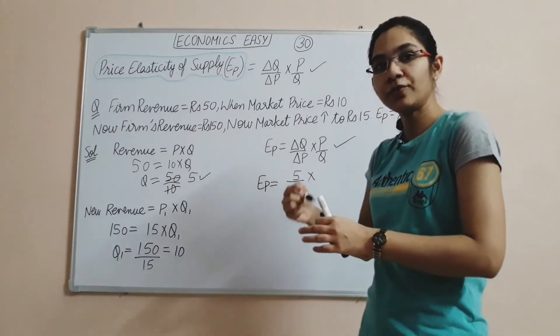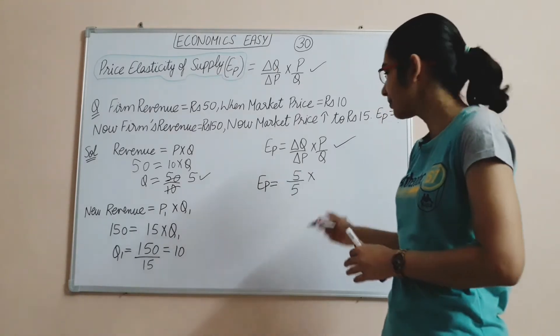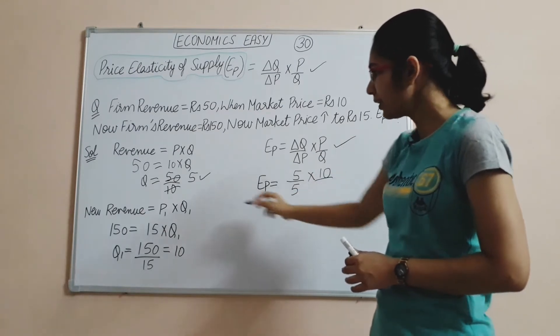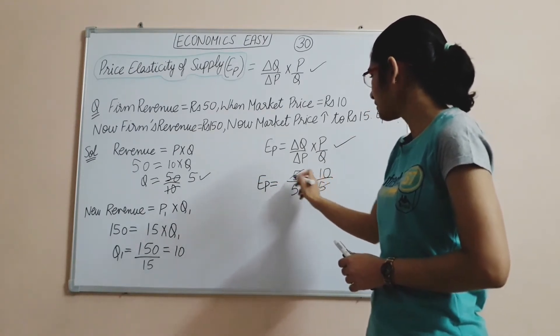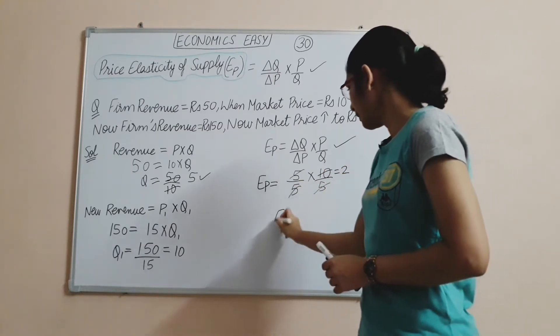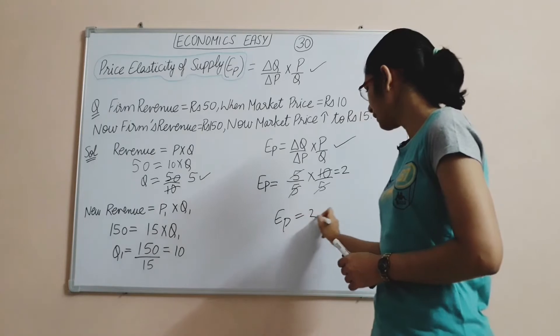We have also studied price elasticity of demand, so you will remember that. Original price is 10, original quantity is 5. We will solve for elasticity. 5 upon 5 times 10 upon 5. We cancel 5, so price elasticity of supply will be 2. This will be the answer.